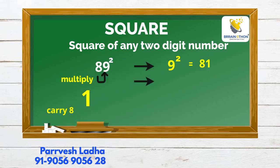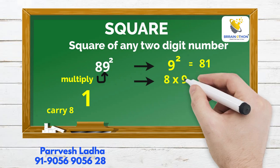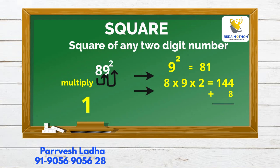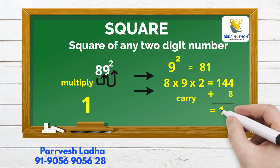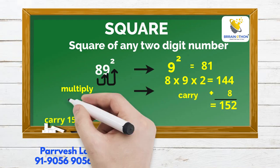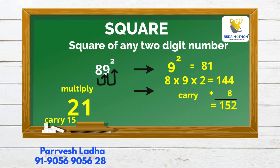Next step, we multiply the units and tens digit number, then multiply with the power number 2, which equals 144. We add the carry 8, so 144 plus 8 equals 152. We write 2 and carry 15.